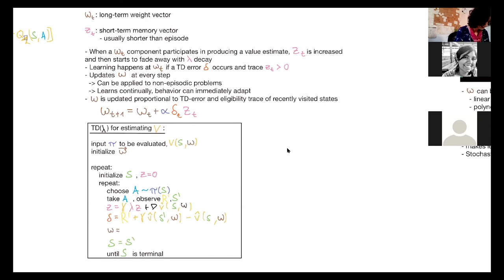And then we update the weight by adding to the old weight what we just wrote above. Step size times the td error times the eligibility trace.